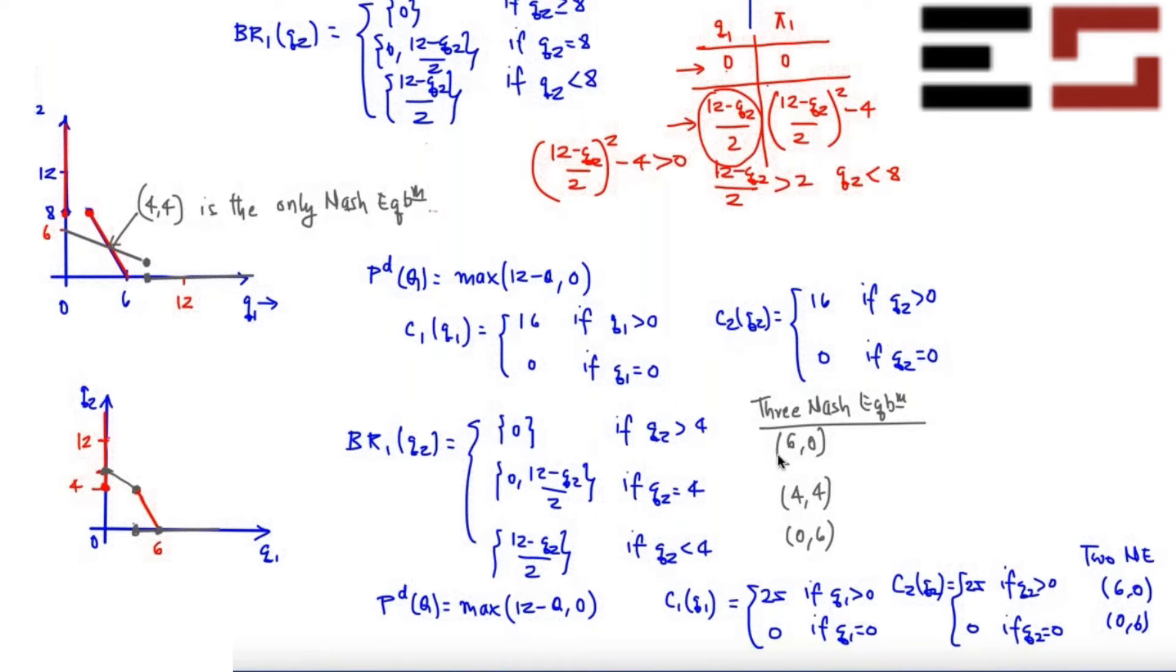And then only one firm will survive and that will produce the monopoly output. So this is also sometimes referred to as natural monopoly. So when fixed costs are high, you will only find one of the firms operating in the industry and they'll produce the monopoly output. If you want you can solve this problem for a monopoly output and you'll find that you'll get (6,0).